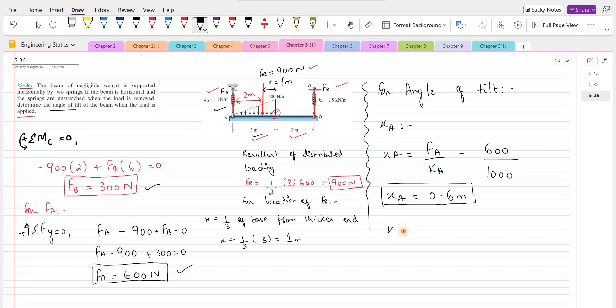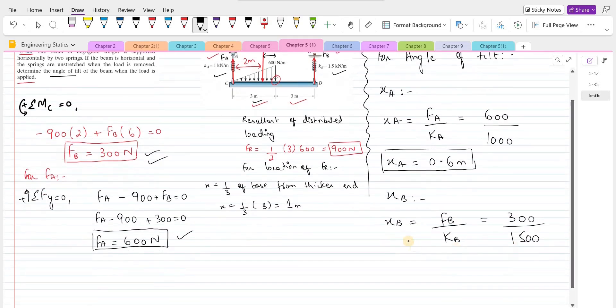And similarly for XB, for the change in length in the spring B, we have F B over stiffness constant K B. So F B is 300 newtons and the stiffness constant K B is 1.5 kilonewtons per meter. So we have to convert it into the newtons first. So the change in length in the spring B is 0.2 meters.